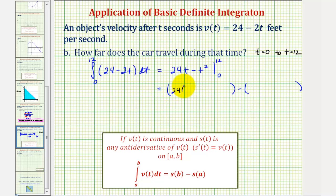So when t is 12, we'd have 24(12) - 12². And when t is 0, we'd have 24(0) - 0². Well here we'll have 288 - 144 minus this would be 0. So this would give us 144.